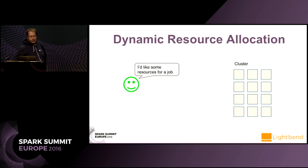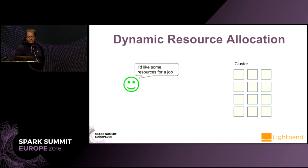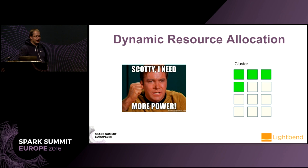So dynamic resource allocation. The idea is just to try to provide to a job or an application the resources it needs when it needs them. An application might not need always the same resources during its lifecycle. For a small example, we have a small job and it needs some resources to do its work, so the cluster assigns some resources and the job processes its data.